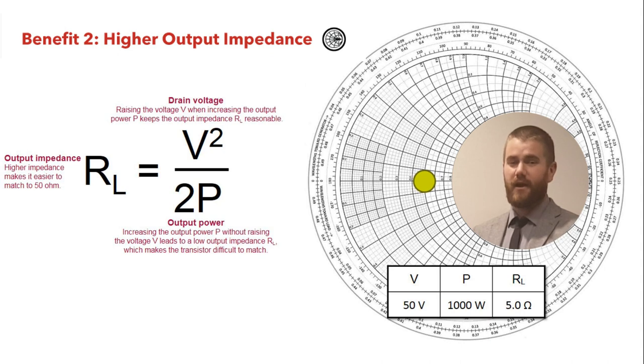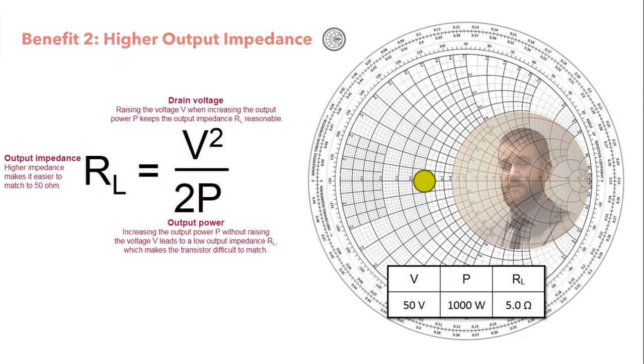Benefit number two, higher output impedance. With 65V technology, we get friendlier impedances at high power, making it easier to match to 50 ohms. Now let's take a closer look.